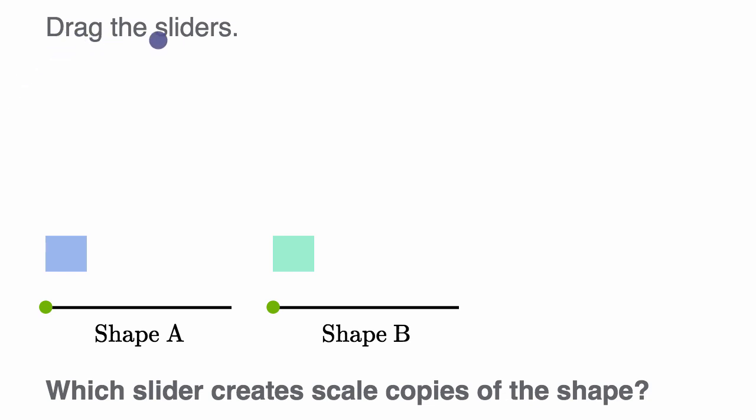We are told drag the sliders, and then they say which slider creates a scale copy of the shape, or which slider creates scale copies of the shape.